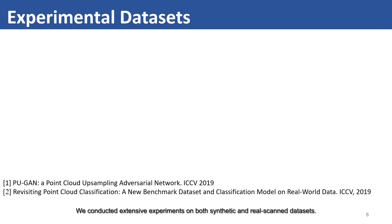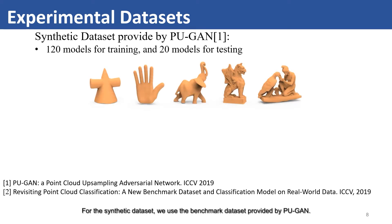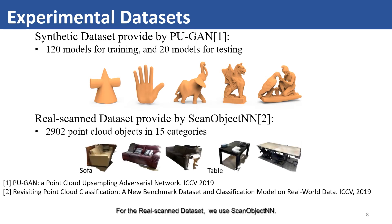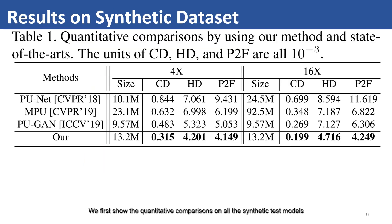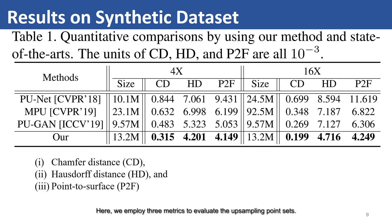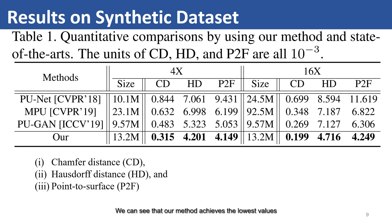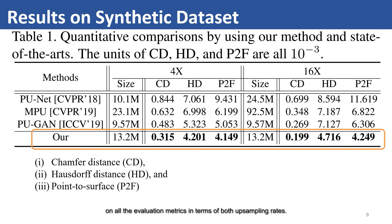We conducted extensive experiments on both synthetic and real scanned datasets. For the synthetic dataset, we use the benchmark dataset provided by PU-GAN. For the real scanned dataset, we use ScanObjectNN. We first show the quantitative comparisons on all synthetic test models under different upsampling rates. Here, we employ three metrics to evaluate the upsampling point sets. For all metrics, lower is better. We can see that our method achieves the lowest values on all evaluation metrics in terms of both upsampling rates.